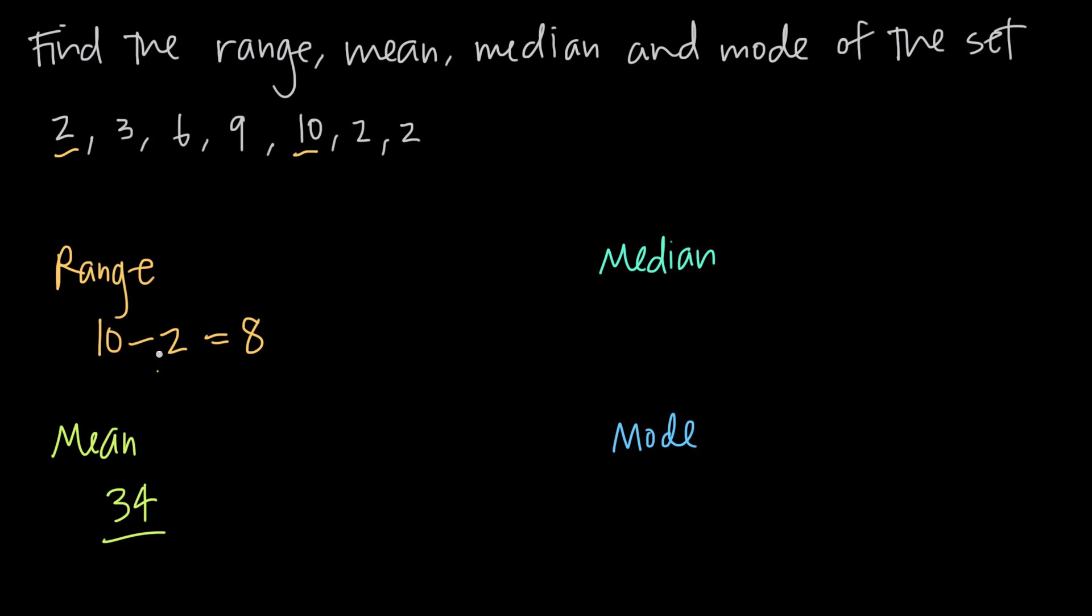If we add all of these together, we'll get 2 plus 3 is 5, 5 plus 6 is 11, 11 plus 9 is 20, 20 plus 10 is 30, 30 plus 2 is 32, and 32 plus 2 is 34. So the total is 34, and then we divide by 7 numbers. We can't reduce this fraction, but if we want to do this on our calculator, we can say that this is approximately equal to about 4.86, or we can just leave it as 34 sevenths.